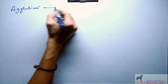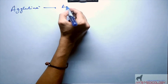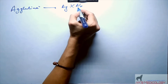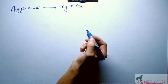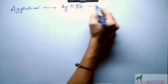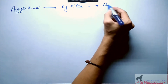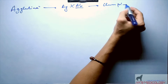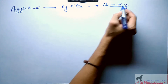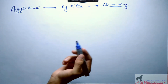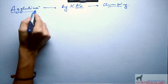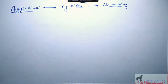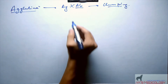Agglutination is the reaction between antigens and antibodies which are formed inside the body, resulting in clumping. If RBCs are also involved, then the agglutination is also called hemagglutination.